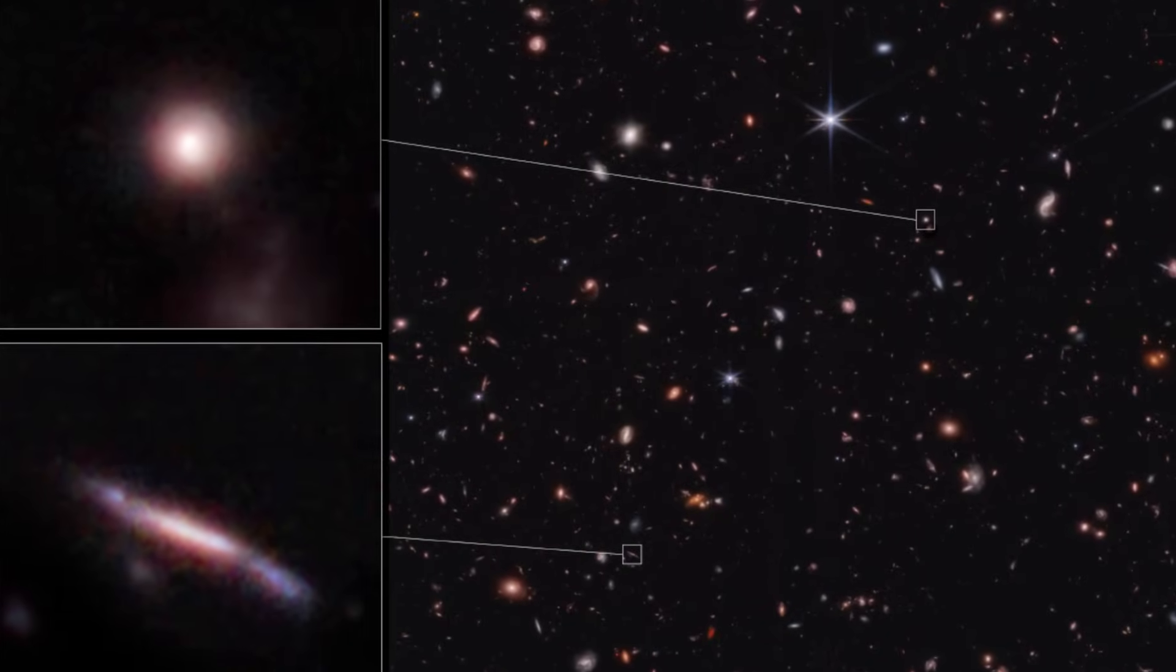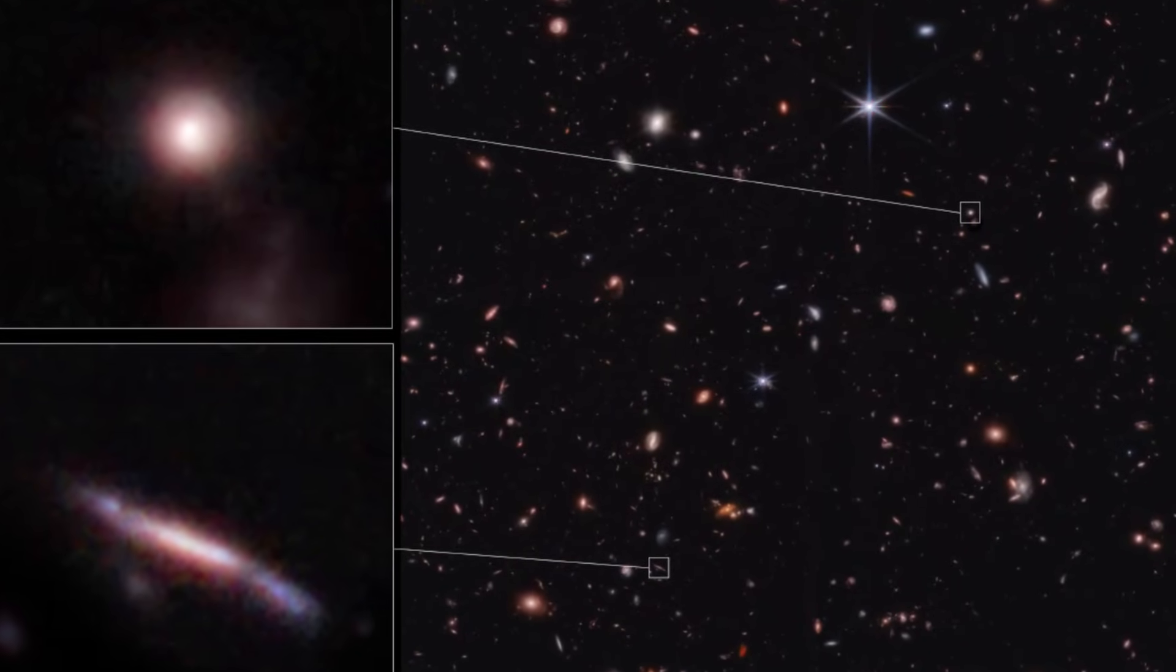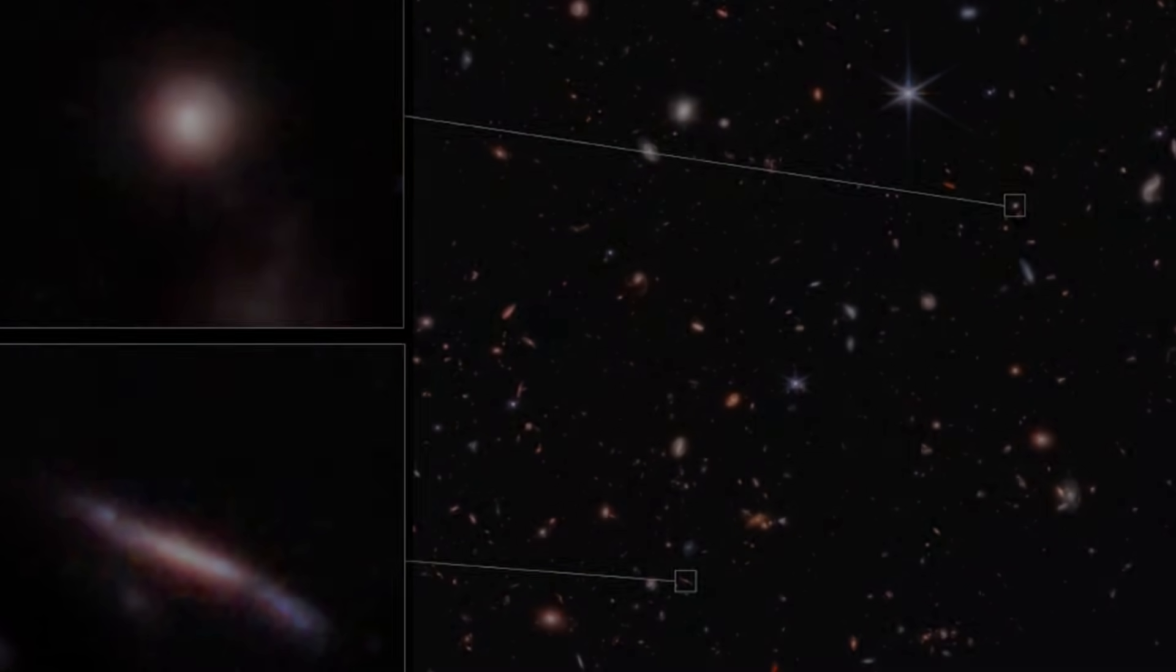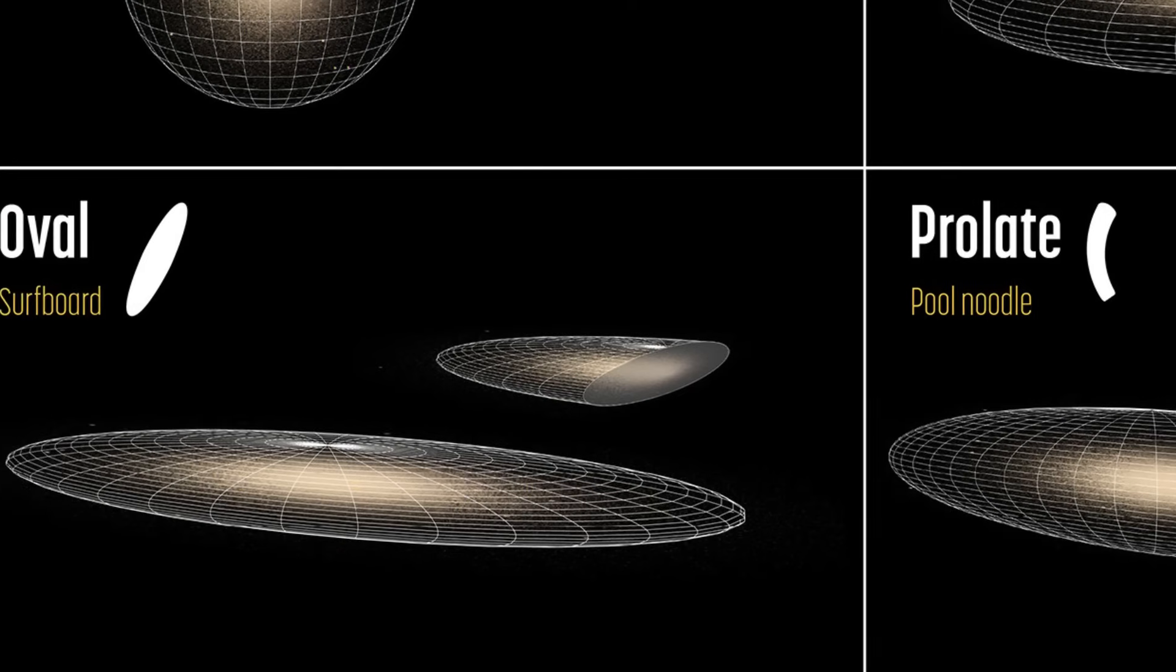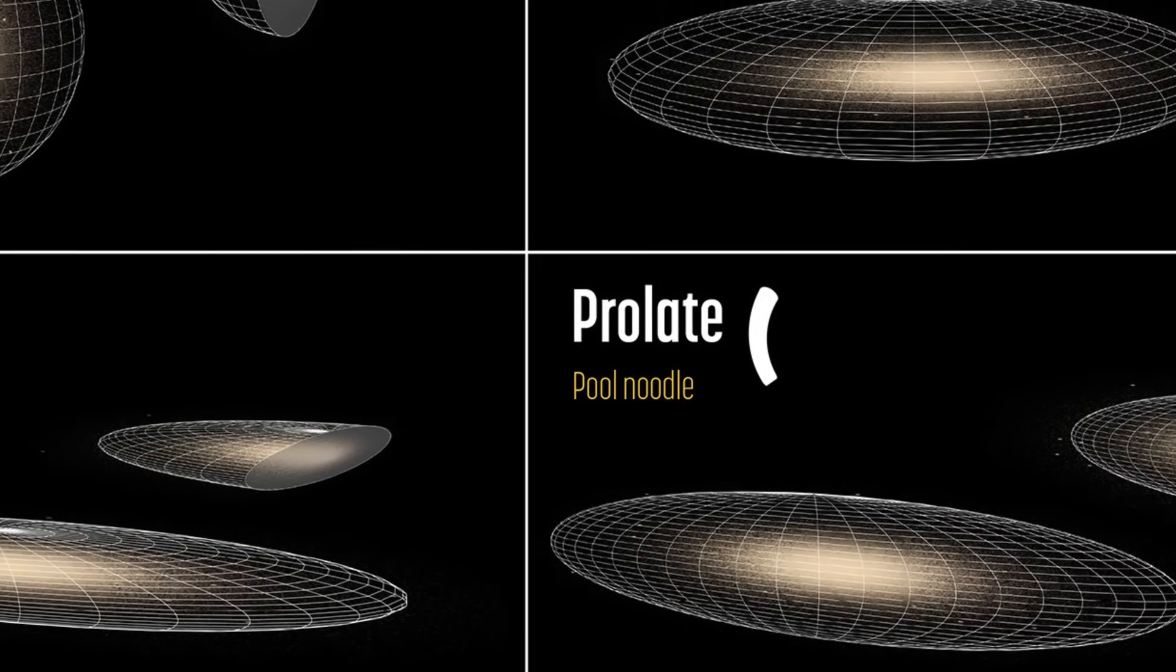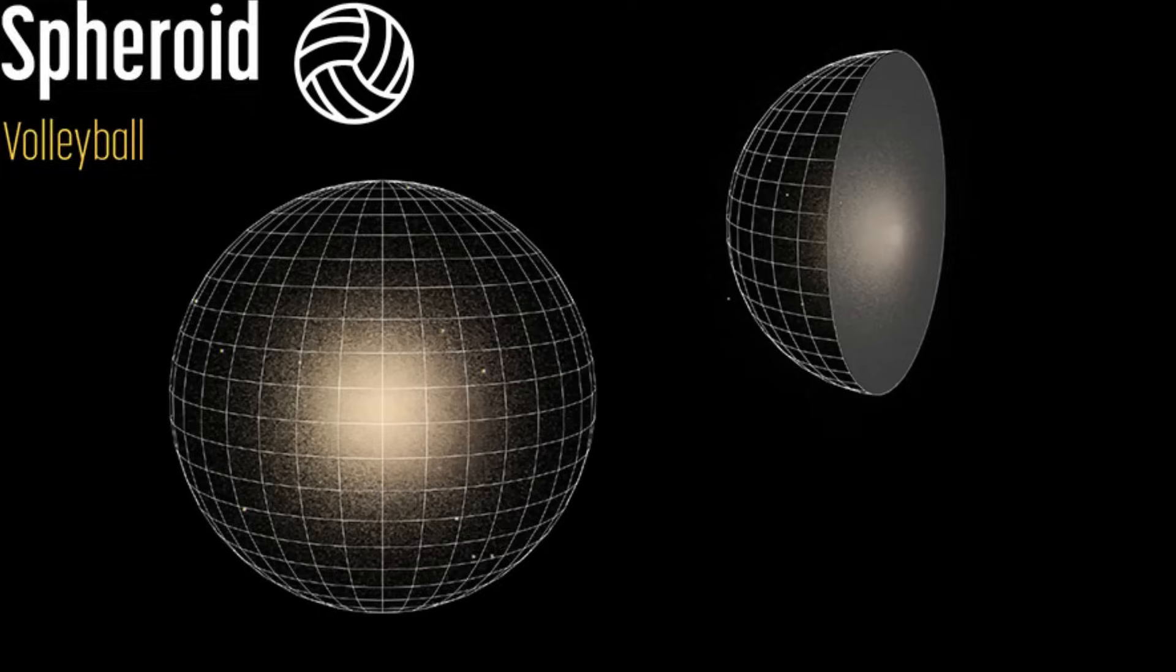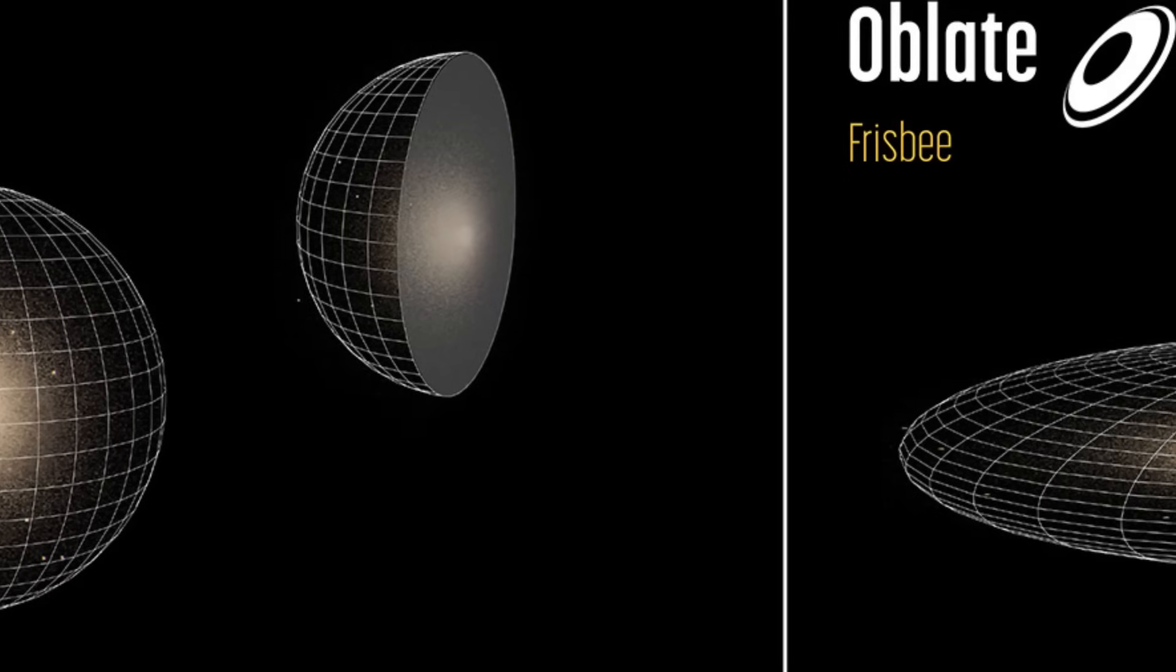The shapes of the newly discovered distant galaxies in the early universe are not what we expected. According to a new study led by Viraj Pandya, a NASA Hubble Fellow at Columbia University, many of these galaxies are flat and elongated, like surfboards and pool noodles, rather than round, like volleyballs or frisbees.